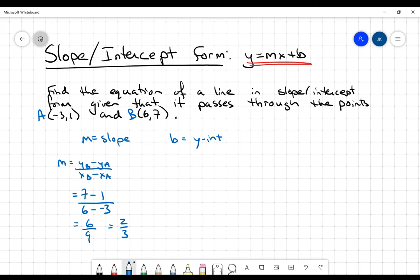So right away, I know I can plug in that value for that parameter. So in this equation, I know what m is. I know it's going to be 2 thirds x plus b.